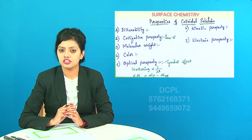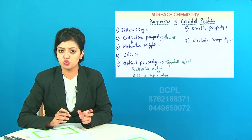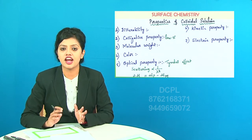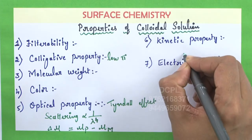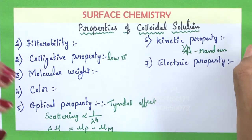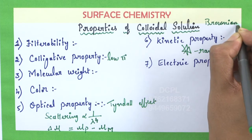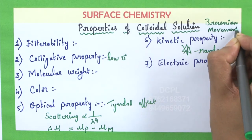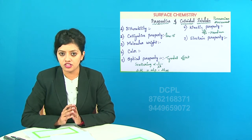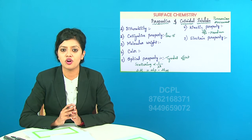The next property is the kinetic property. The dispersed phase particles in a dispersed medium move in a zigzag or random manner. This random zigzag motion of the colloidal particles is known as Brownian motion, discovered by Mr. Brown. It is observed up to a particle size of 0.5 micron. Brownian motion suppresses the gravitational force and hence is responsible for the stability of the colloidal solution.